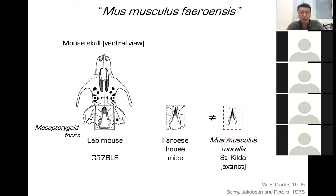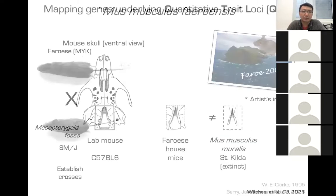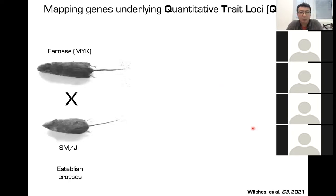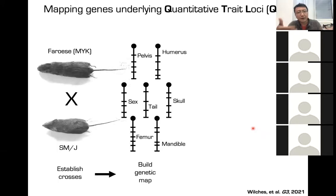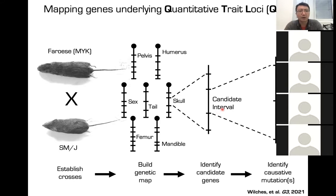For mice on remote islands, this becomes effectively a natural experiment with islands serving as petri dishes. Among all these islands, the Faroe Islands in the northern Atlantic were reported to have some of the largest mice in the world. I was interested in this because I want to understand the process of parallel evolution — comparing the genes involved in examples of gigantism in the lab and artificial selection versus those in the wild. So we picked the Faroe Islands for an in-depth study.